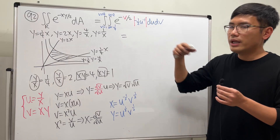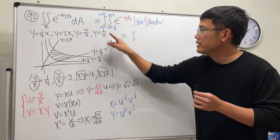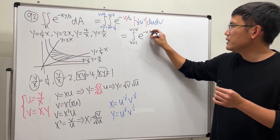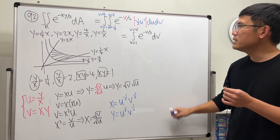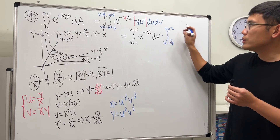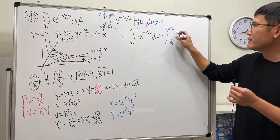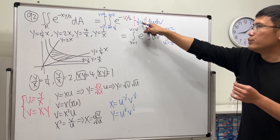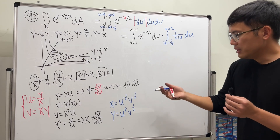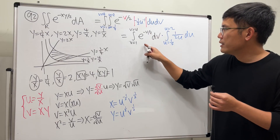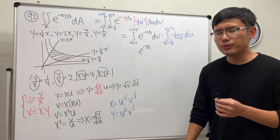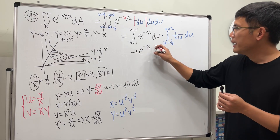Since the integrand has no u in the e^(−v/2) part, we can separate the integral into two parts. First: ∫ from v=1 to 4 of e^(−v/2) dv. Second: ∫ from u=1/4 to 2 of (1/2)·u^(−1) du. Evaluating the first integral: e^(−v/2) integrates to −2e^(−v/2), evaluated from 1 to 4.